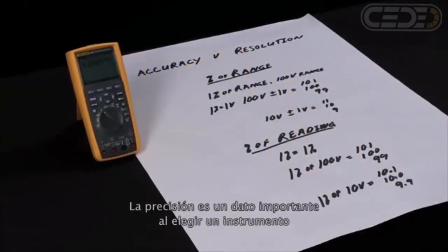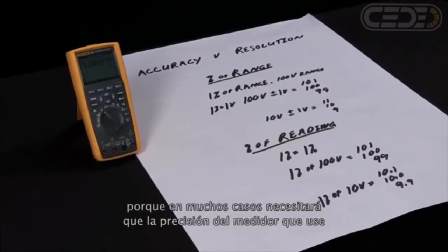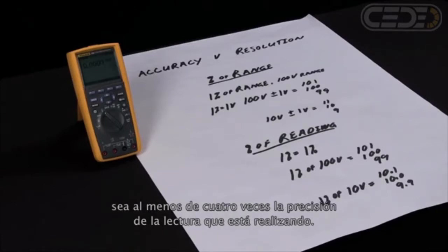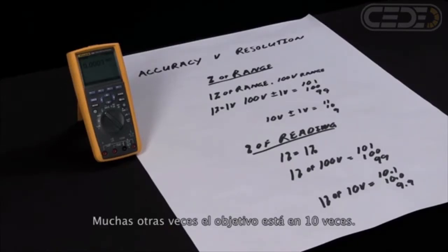Accuracy is an important specification when selecting an instrument because in many cases you want the accuracy of the meter you're using to be at least four times the accuracy of the measurement you're taking. A lot of times ten times is actually the goal.